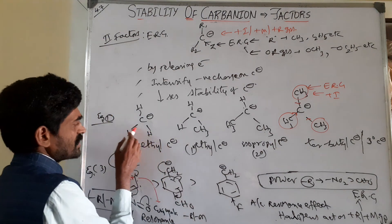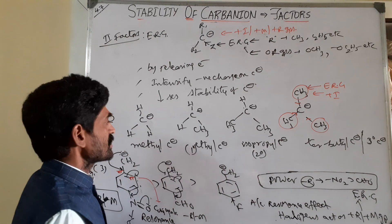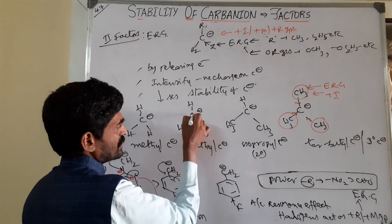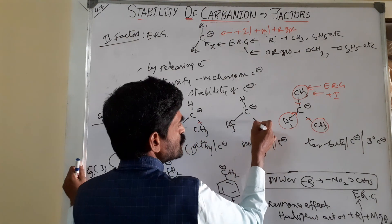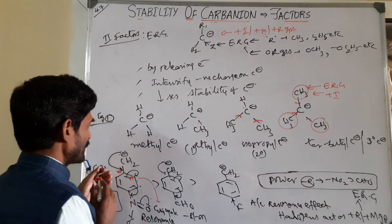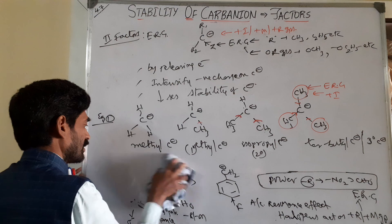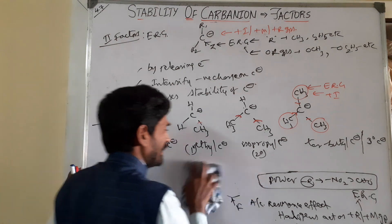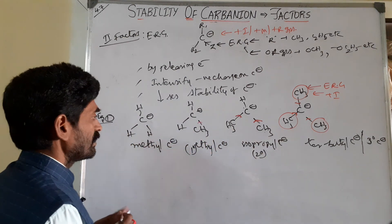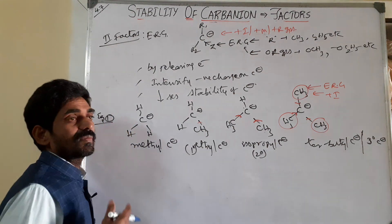In the methyl carbanion, there are no alkyl groups - only hydrogens, which are neutral. They are neither releasing nor withdrawing groups, so it is going to be more stable. Here, one alkyl group is releasing electrons, going to more unstable. Two alkyl groups make the carbanion more unstable. Three groups make it highly unstable. So the stability of a carbanion carrying electron releasing groups: the stability of the carbanion is inversely proportional to plus-I groups.